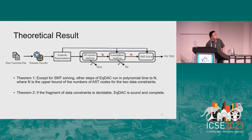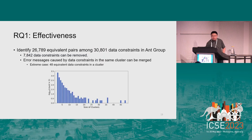Our theoretical results show that except for the SMT solving phase, all stages in our decision procedure can be achieved in polynomial time relative to the size of the data constraints. It is sound and complete if the data constraint belongs to a decidable fragment. Our approach has been very effective, discovering over 26,000 equivalent pairs among over 30,000 data constraints, showing that we can safely remove 8,000 data constraints from the system.